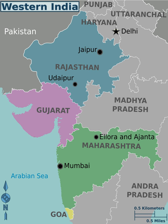The Western Indian region was ruled by the Rashtrakuta Empire, the Maurya Empire, Gurjars, Rajputs, Satavahanas, Western Satraps, Indo-Greeks, Kadambas, and others in ancient times. During the Medieval Age, the area was under the rule of the Vaghela dynasty, the Gujarat Sultanate, and the Delhi Sultanate.